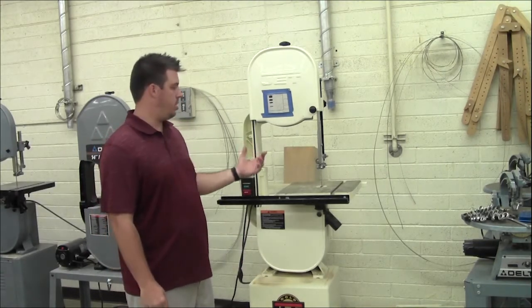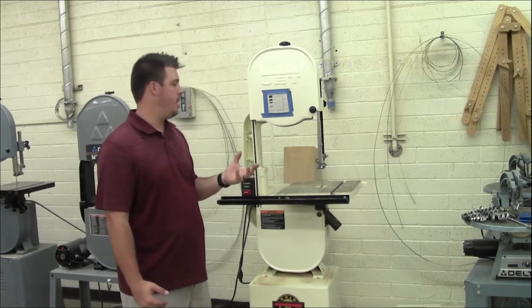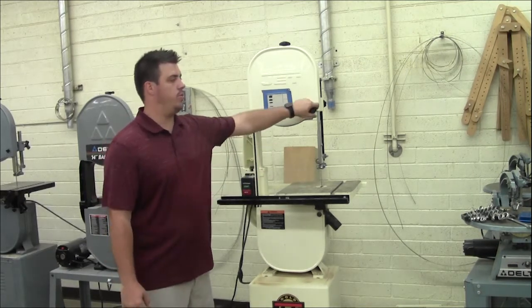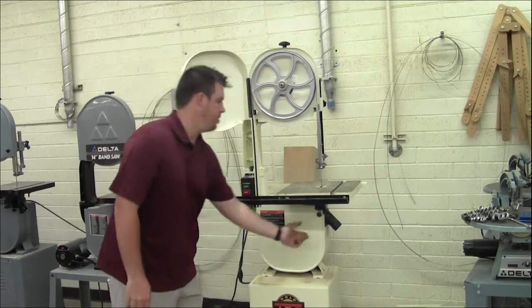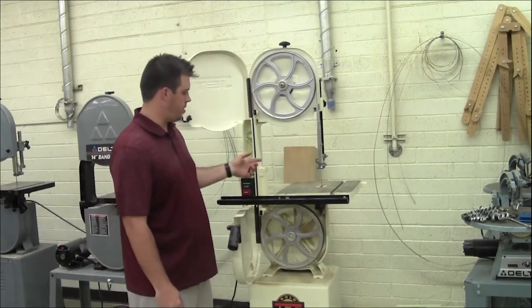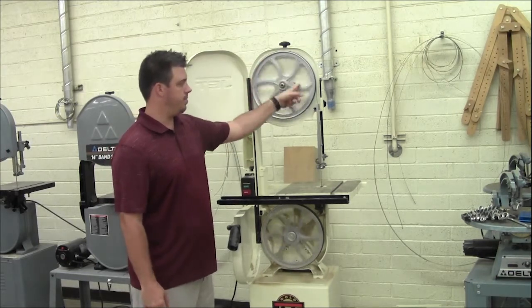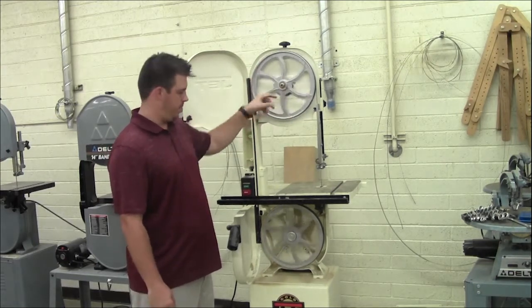A band saw has just one large blade that's put together, so it's just one circular band, and it goes around two different wheels inside the machine. So we look at it here, down here, to turn on power, and it will be spinning, basically.